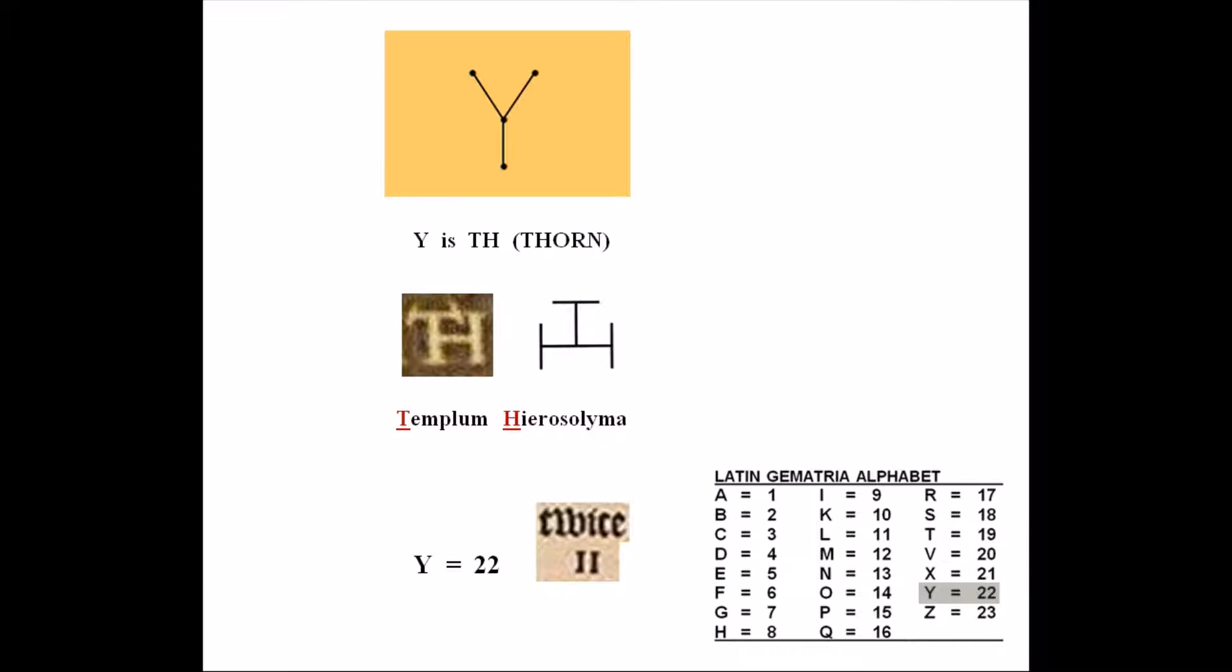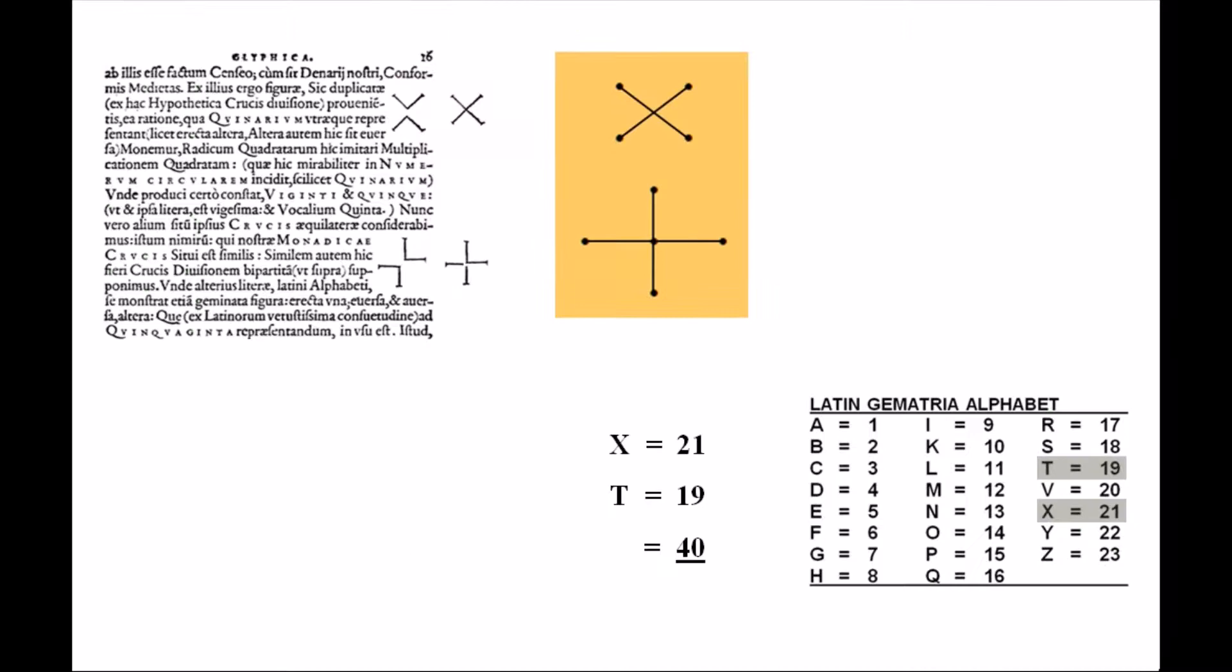The letter Y, and I believe this goes back to middle and early modern English, is called a thorn, and was used in printing for the letters TH. Think of ye olde restaurant, or whatever. Now, like I've shown in my previous videos, TH stands for Templum Hierosalima, and is used to make these symbols of Freemasonry. Also, with Gematria, the letter Y is equal to 22, or twice 11.